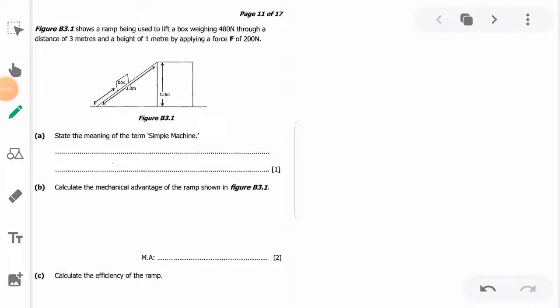Welcome to this video on physics, looking at simple machines examples. Figure B3.1 shows a ramp being used to lift a box weighing 480 newtons through a distance of 3 meters and a height of 1 meter.